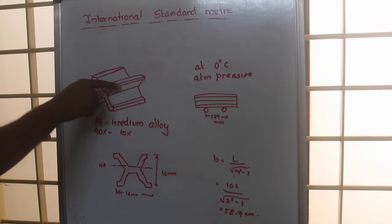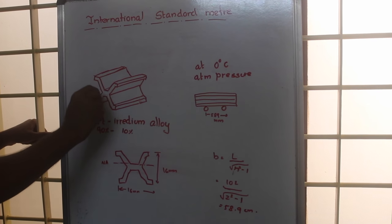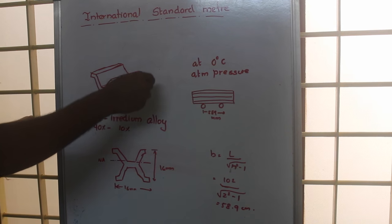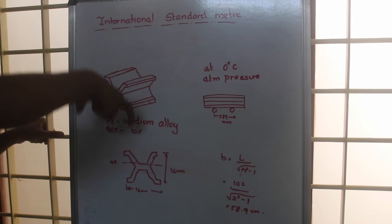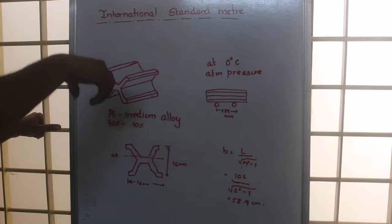In this polished surface there will be two scribings, one scribing here and one scribing at the other end. The distance between these scribings will be 100 centimeter or 1 meter.